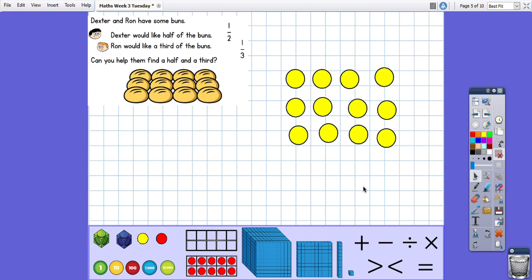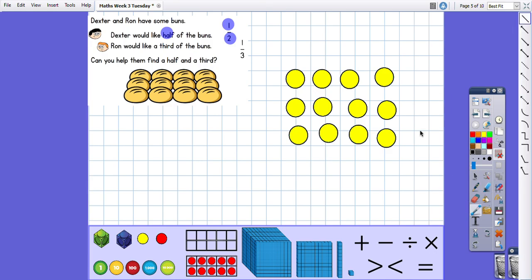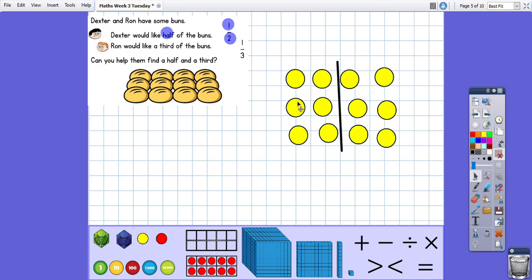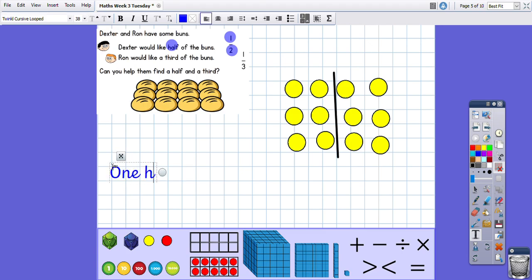So you could draw them out too if you want to do it along with me. Now Dexter would like half. So we know that when we are looking for a half, we are looking for two groups. And only looking at one of those groups. So I need to split the buns into two groups. I'm going to split them straight down the middle here. And if I do that, I need to just check that I've got equal groups. So here I've got two, four, six. And on the other side, I've got two, four, six, because there are 12 buns in total. So one half of the buns is six.